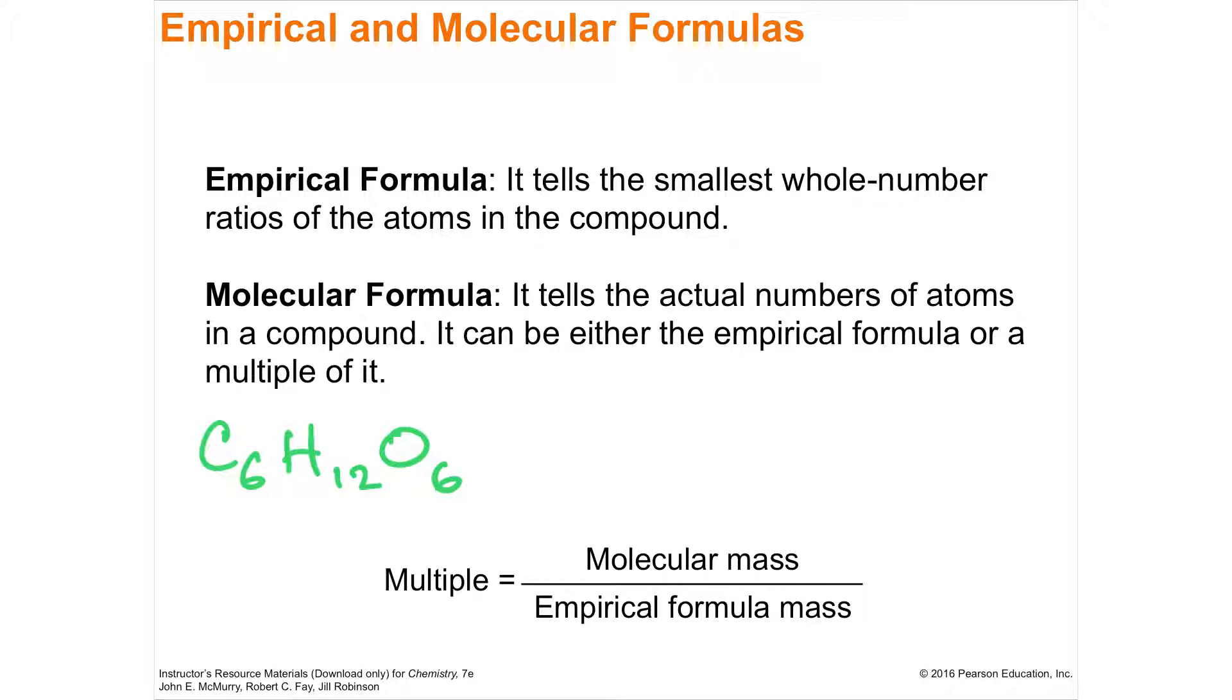But often when you figure out what's in something, you can't automatically go to C6H12O6. Instead, you find the empirical formula, which is just the smallest whole number ratio of the atoms. So if I divide 6 into 6, 12, and 6, I get C1H2O1.